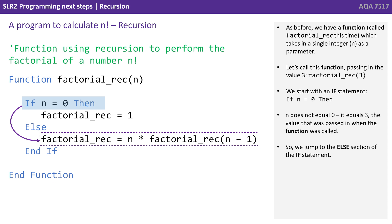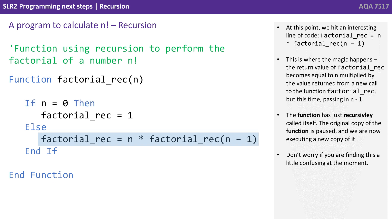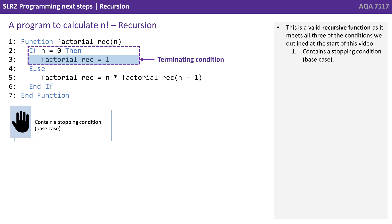At this point we hit an interesting line of code: factorial_rec equals n times factorial_rec(n minus 1). Now this is where the magic happens. The return value of factorial_rec becomes equal to n multiplied by the value returned from a brand new call to the function factorial_rec, but this time passing in n minus 1. The function has just recursively called itself. The original copy of the function is paused and we now execute the new copy of it.